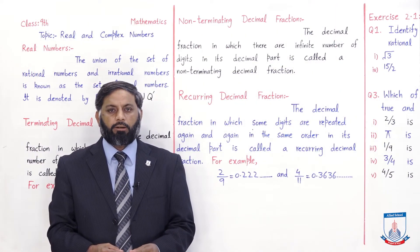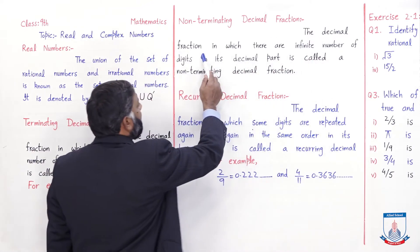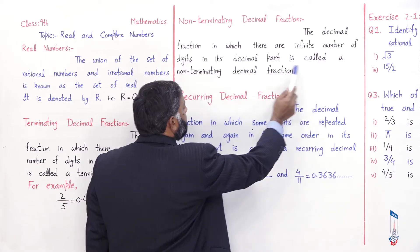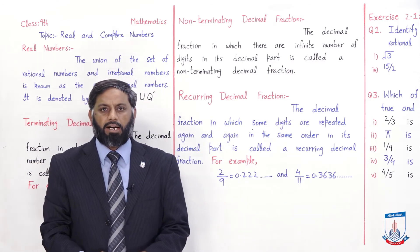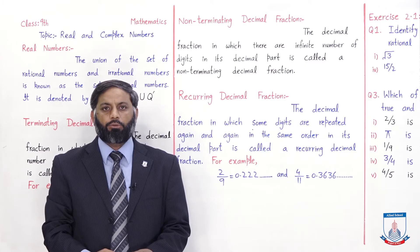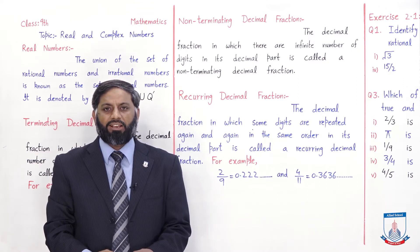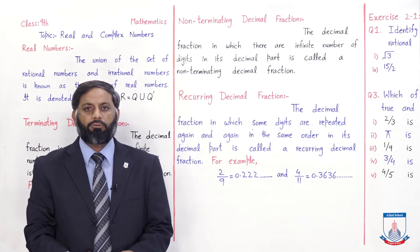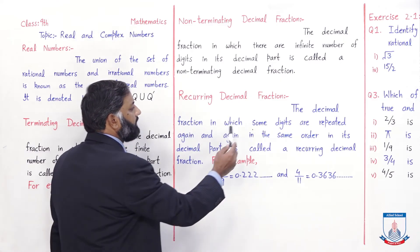Non-terminating decimal fraction کی definition: the decimal fraction in which there are infinite number of digits in its decimal part is called a non-terminating decimal fraction. ایسی fractions کو جب divide کریں گے تو remainder کبھی بھی zero نہیں آئے گا، اور decimal digits کو count نہیں کیا جا سکتا۔